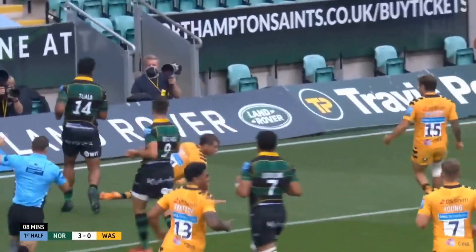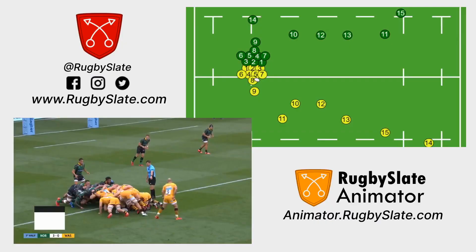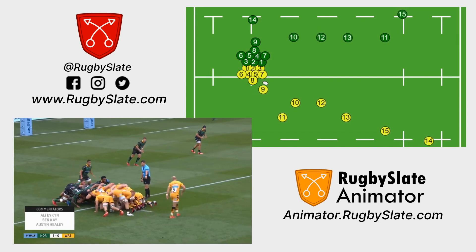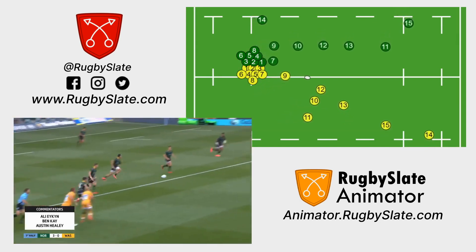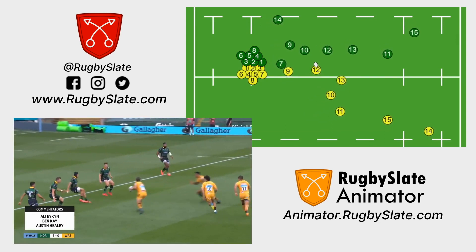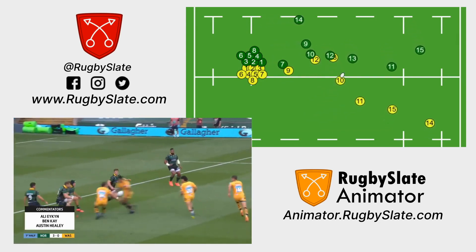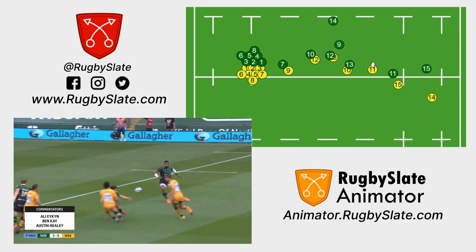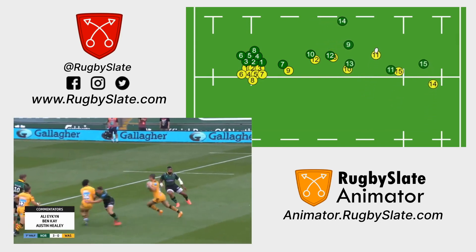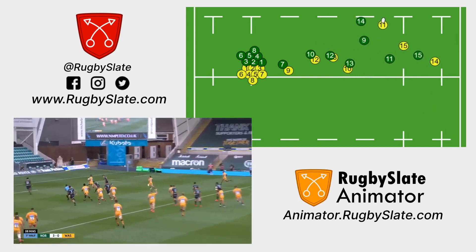Let's start by breaking down the move. The set up is a scrum on the opponent's 22. The 8 flicks the ball to the 9 so the scrum half is able to deliver a miss pass straight to the 12. The 12 pulls the ball back to the 10 while the 13 crashes past as a screen, and another fly half draws the defender and gives the ball to the blindside winger who is now looped outside them.